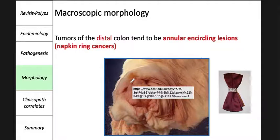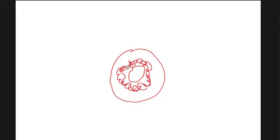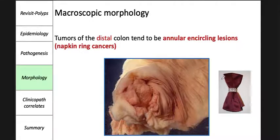Tumors of the distal colon tend to be annular encircling lesions. The tumor involves the wall in an annular fashion, causing puckering, an increased fibrotic response, and pulling of the serosa, leading to a deformity called a napkin ring deformity. The tumor causes fibrotic response and narrowing of that part of the intestine.